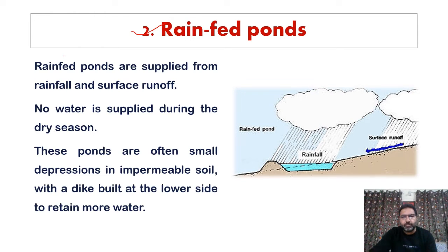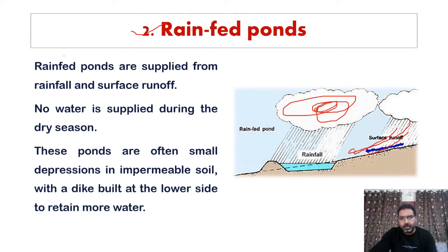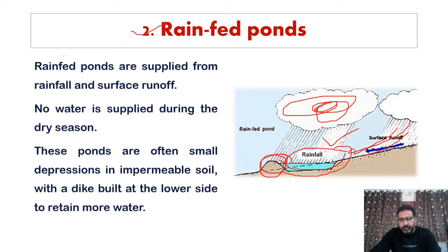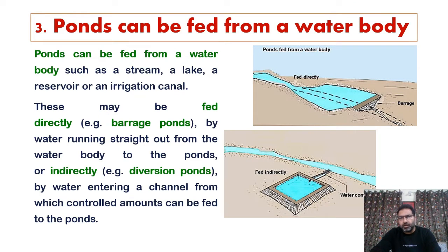The second category of ponds is rain-fed ponds. Rain-fed ponds are supplied from rainwater and surface runoff — water which comes from the surface and gets accumulated in a low-lying depression like a pond. There is no water during the dry season, so such ponds are totally dependent on rainfall. These ponds are often small depressions in impermeable soil, and if a dike is built on the lower side, the water retention capability is increased.